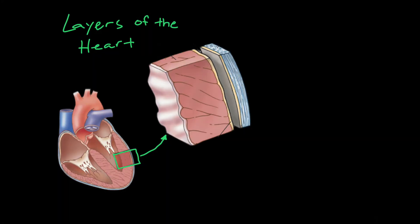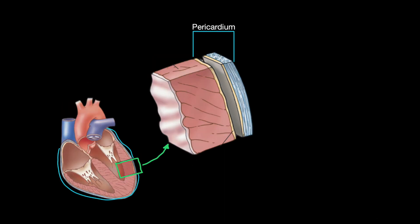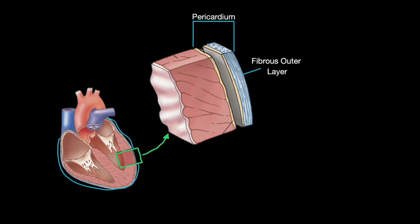Now onto the heart itself — we are going to take a chunk out and examine the three layers. First is the pericardium. The pericardium encases the heart like a glove. It is a thin fibrous sac that functions as a layer of defense and provides lubrication to decrease friction between the heart and the organs near it. The pericardium is split into two sections: the fibrous outer layer and the serous inner layer.